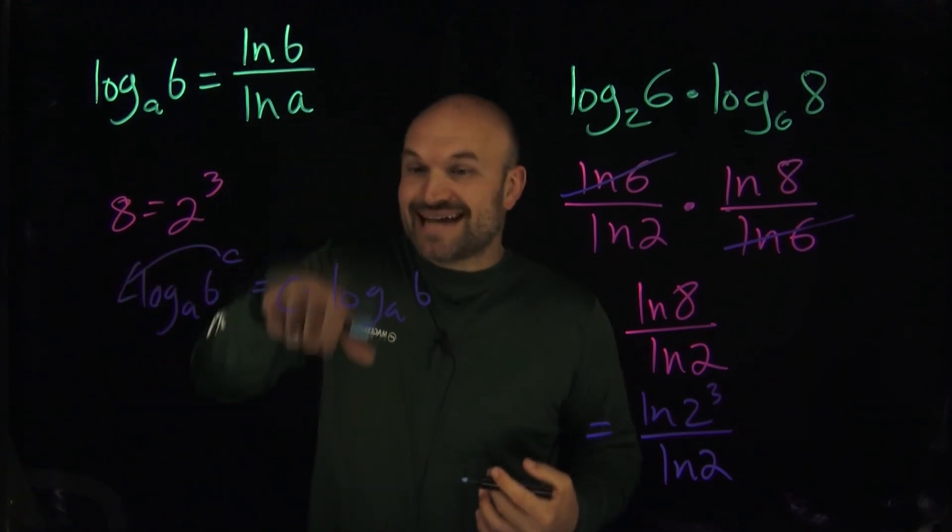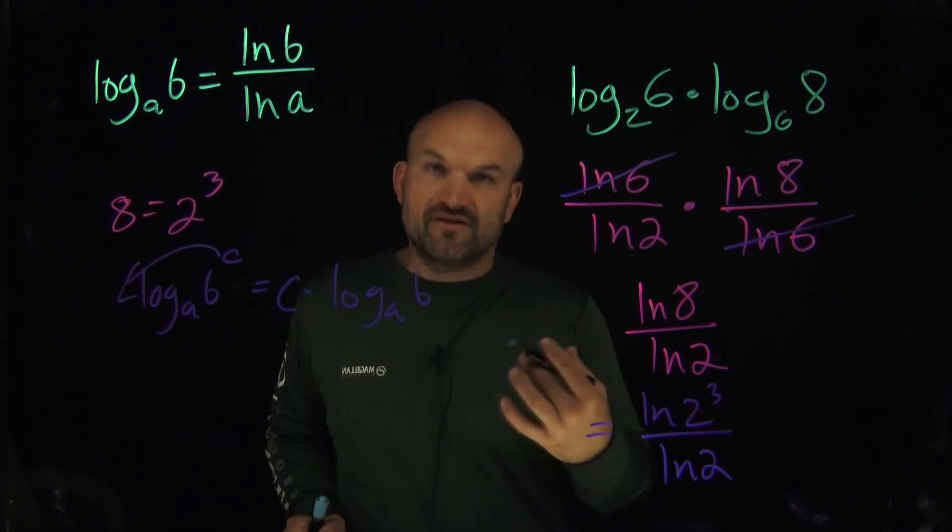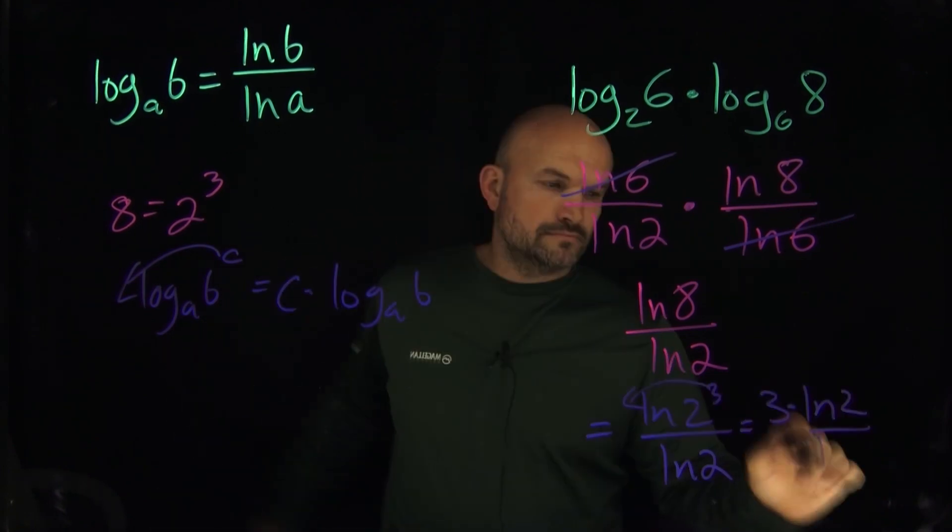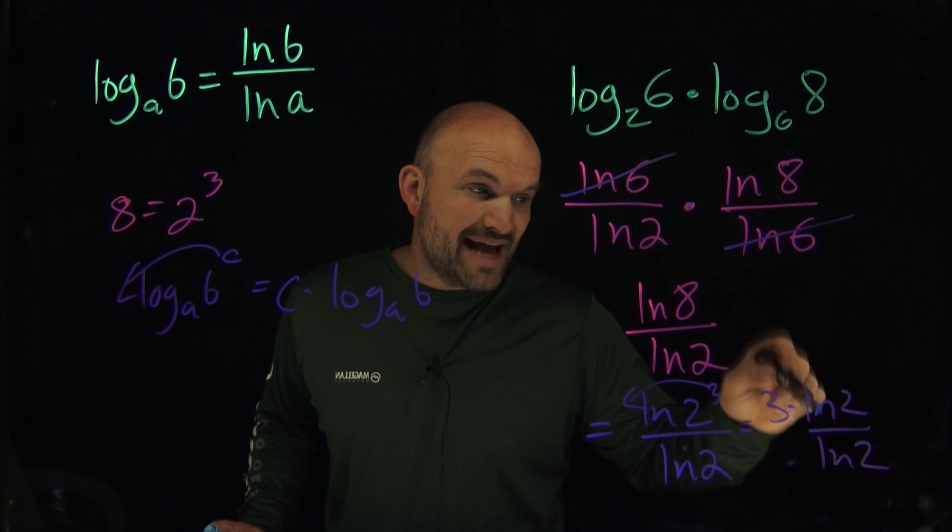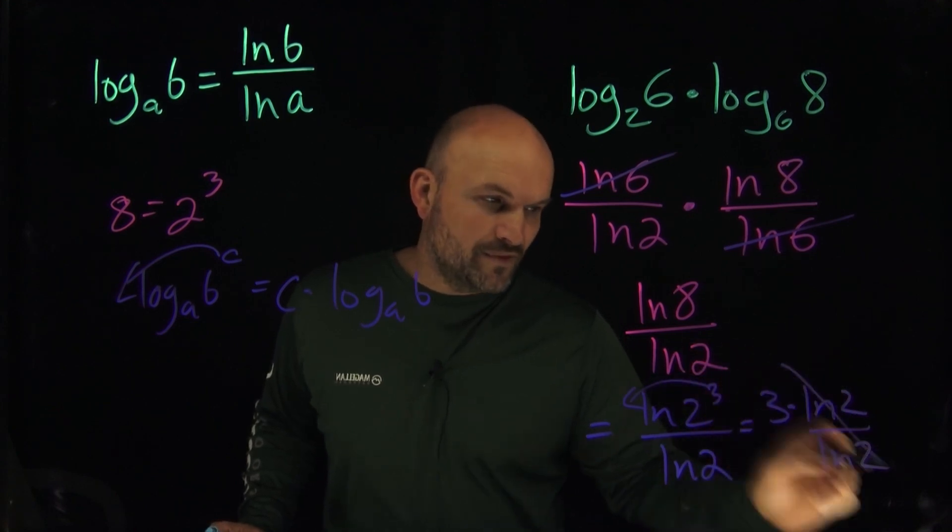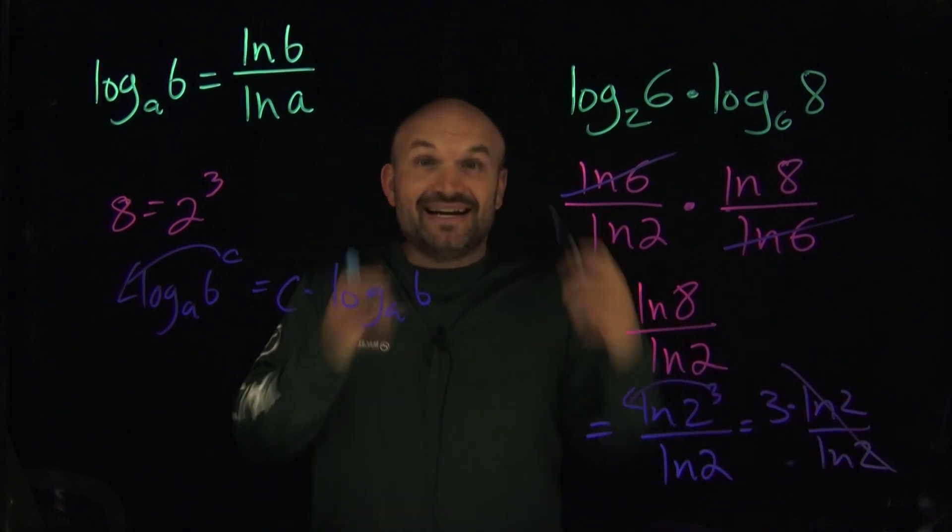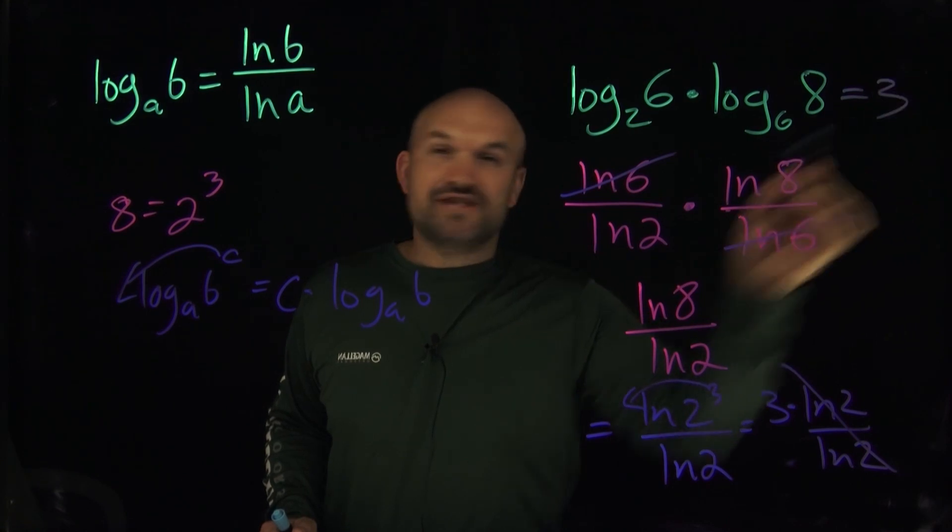So I can take this 3, I now have 3 times ln of 2 divided by ln of 2. Well, those are going to divide out. Leave me with a final answer, ladies and gentlemen, of just a 3.